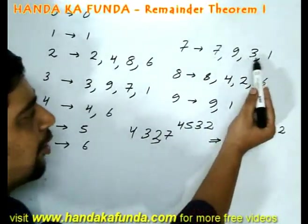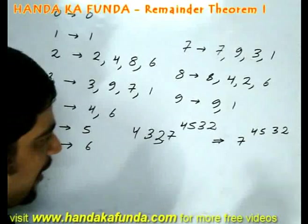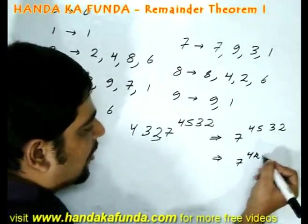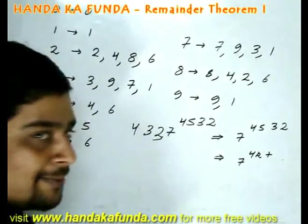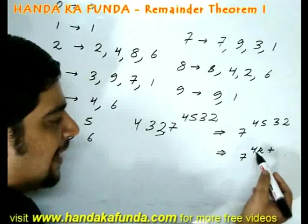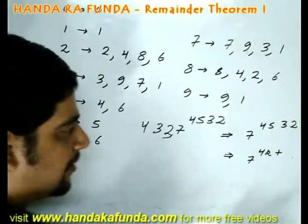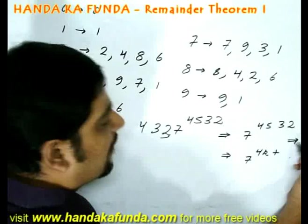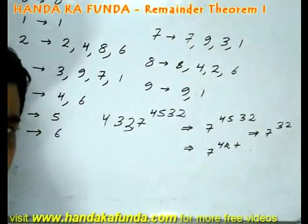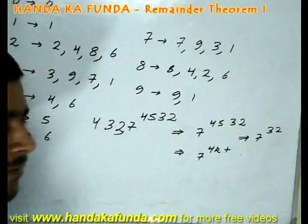Cycle for 7 is a cycle of 4 values. So I need to express this as 7 to the power of 4k plus something. Once again here when I am dividing by 4 it is a function of just the last two digits. So this question is no different from 7 to the power of 32, because when dividing by 4 only the last two digits matter.